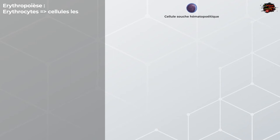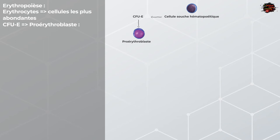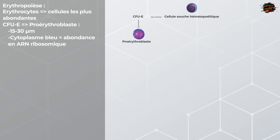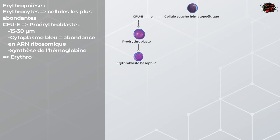Les érythrocytes sont les cellules du sang les plus abondantes, et ce sont le stade final du développement de la lignée érythrocytaire. Afin d'arriver à ce stade de globules rouges différenciés, les CFU-E se différencient d'abord en proérythroblastes. Ces cellules mesurent entre 15 à 30 microns. Le cytoplasme bleu observé en microscopie est dû à l'abondance en ARN ribosomique. Au sein de ce cytoplasme, un grand nombre de ribosomes vont commencer à synthétiser l'hémoglobine. Ces proérythroblastes vont se diviser pour donner deux érythroblastes basophiles, qui vont continuer à synthétiser de l'hémoglobine.